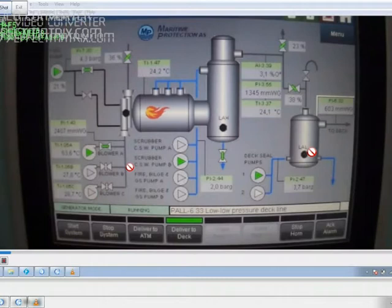We can test the low level alarm for the deck seal also here. Once the alarm comes this will come right here. Similarly, when you open the inert gas system door, you get an alarm here. This black spot will come red.